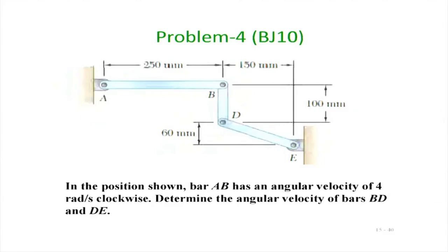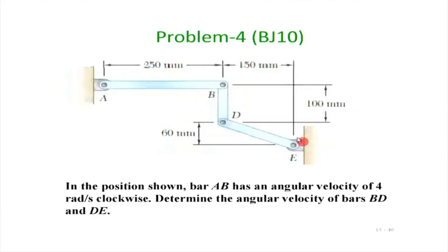The fourth problem uses the concept of instantaneous center of rotation. In the position shown, bar AB has an angular velocity of 4 radians per second clockwise. We need to determine the angular velocities of bars BD and DE. For rod DE, which is pinned at E, the velocity of point D must be perpendicular to DE — the velocity direction depends on whether the rotation is clockwise or anticlockwise.